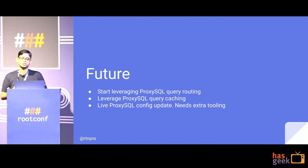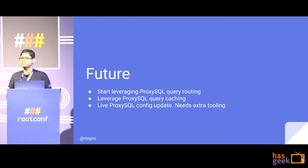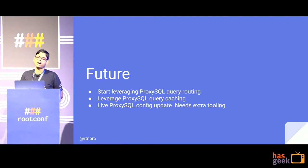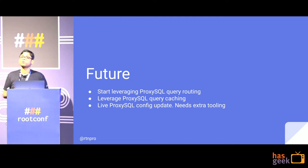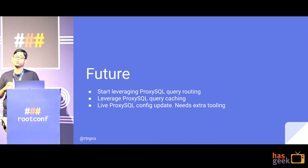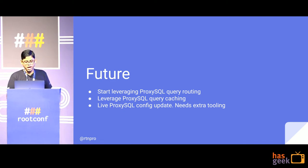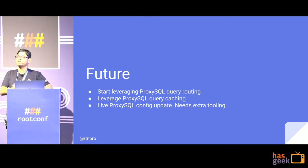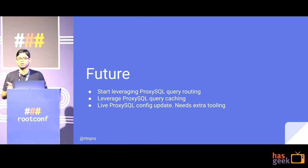What's in store for ProxySQL at Zapier in the future? Currently, we use Django-based routing as a simple approach without needing code refactor. We'd like to try query-based routing configured at the ProxySQL level. ProxySQL also has an efficient TTL-based query caching feature, more efficient than MySQL's query caching, though it requires some app refactoring for cache invalidation control. We also want to implement live configuration updates so we don't need to restart ProxySQL at all.